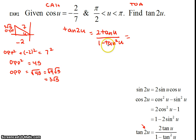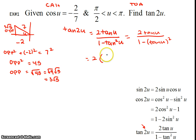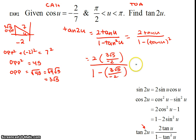Now we plug into the formula. Remember that tangent squared of U means tangent of U, squared. Be very clear about what is 2U versus tangent squared of U — distinguish between a little exponent and a big coefficient, and exaggerate it if you have to. Plugging in tangent as opposite over adjacent, we get 2 times 3 root 5 over negative 2, all over 1 minus that quantity squared.